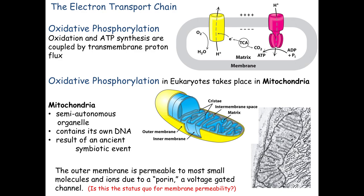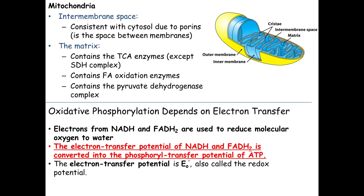We have NADHs and FADH2s generated in glycolysis, the citric acid cycle, and even from the pyruvate dehydrogenase complex. They start in the cytoplasm or intermembrane space, come to the surface of the inner membrane, and give their electrons to transport molecules. Those electrons pass down the chain — it's downhill in energy — and we use that energy gradient to pump protons.